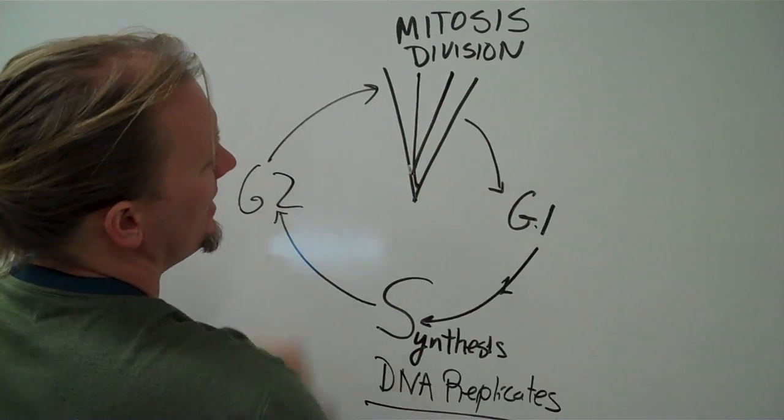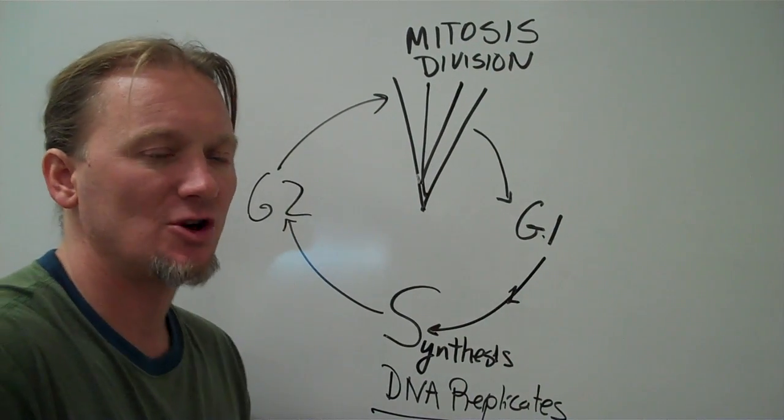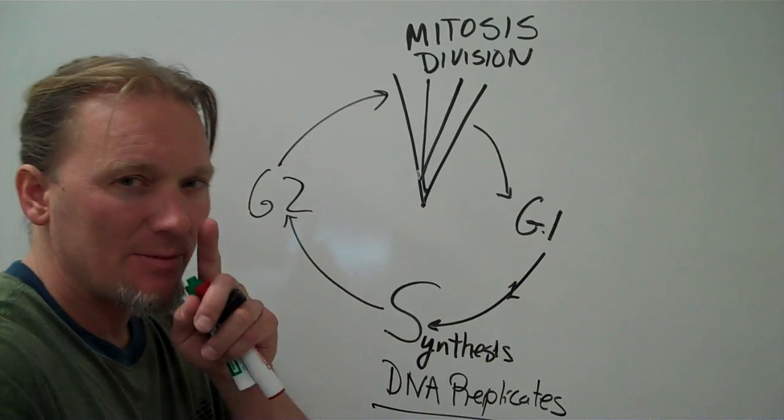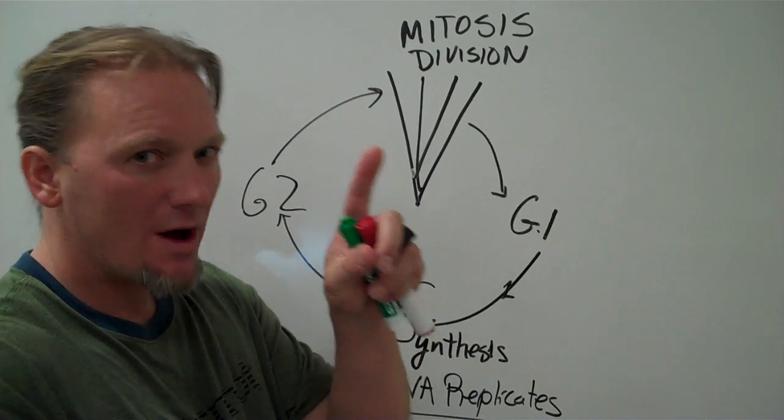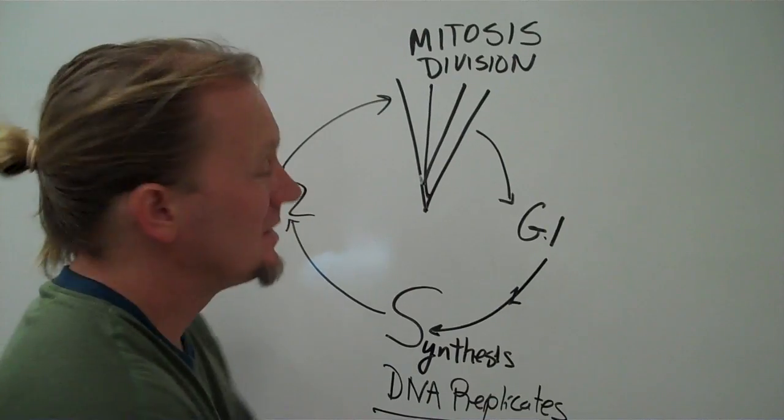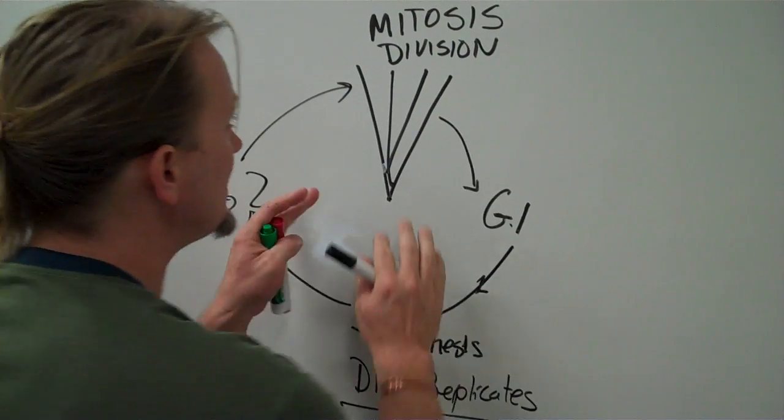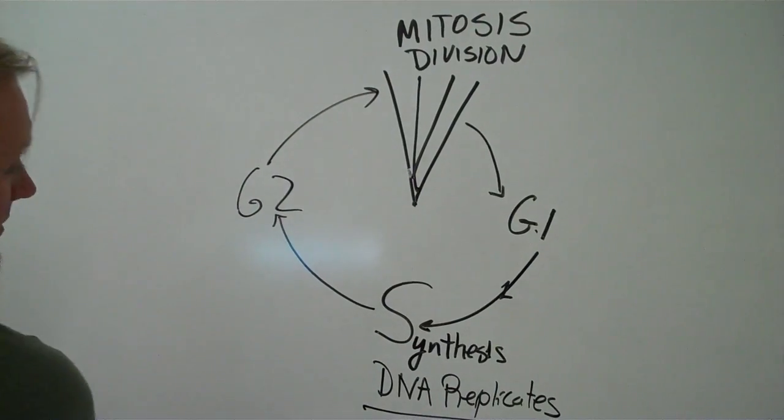Mitosis itself is divided into several phases. Now I've mentioned you don't need to know the name of all the phases. But I'm going to talk about a couple that are important. Actually for me, there's only one important phase, and that's metaphase. And that's the one that I always like to emphasize. So this is the cell cycle.